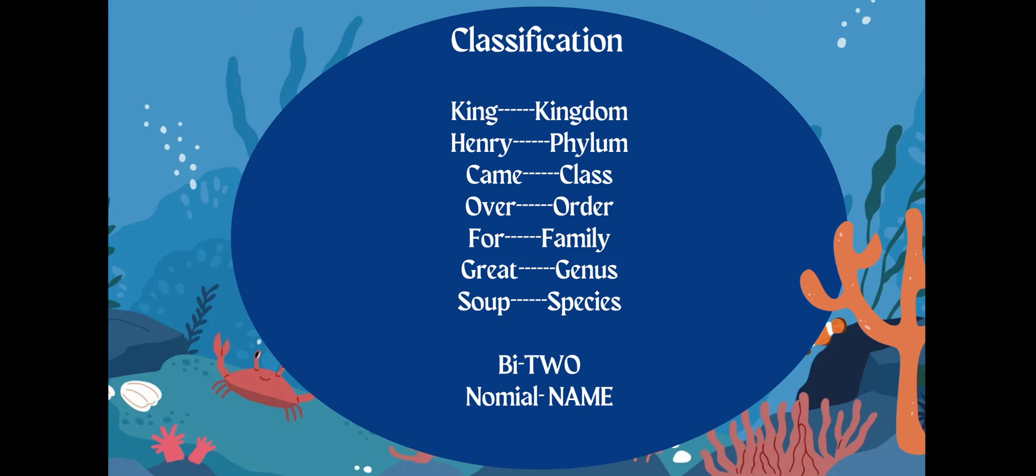So King Henry came over for great soup: Kingdom, Phylum, Class, Order, Family, Genus, and Species. Now, what does the genus and species tell us?